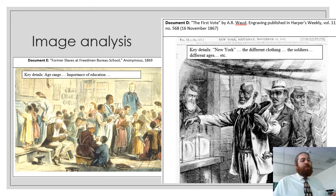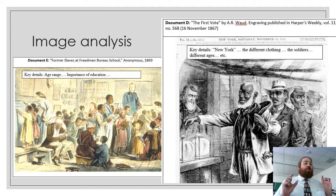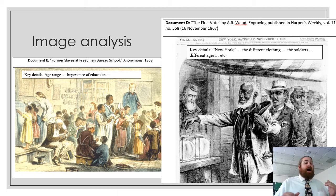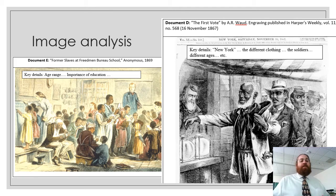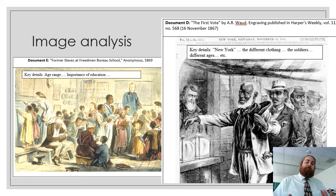Image analysis is another key area. If you look at these images without any practice or scaffolding, they seem kind of basic. But if you can teach people to look at layers of detail, all of a sudden these images become a lot more important. You can notice within the classroom image there's a huge age range, implying the importance of education across the board for recently enslaved persons. In the voting line image, you can see all sorts of people dressed in different ways — implying different wealth, different ages, as well as soldiers. A student who's never had practice with image analysis might miss all of that, and miss the point of these pieces of evidence entirely.